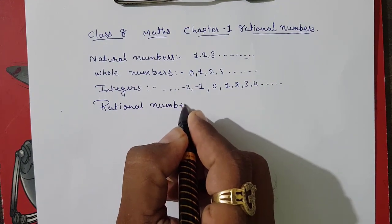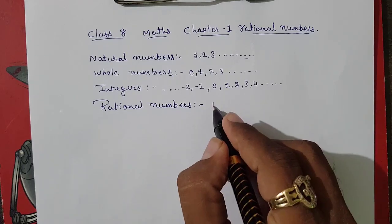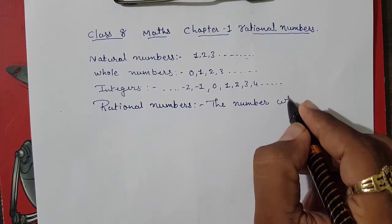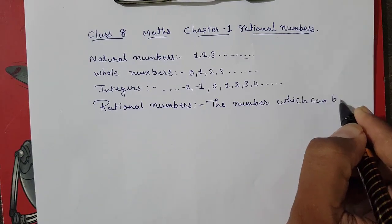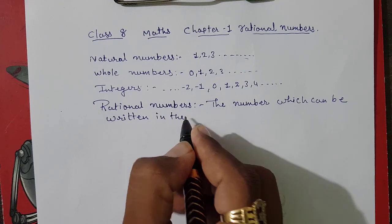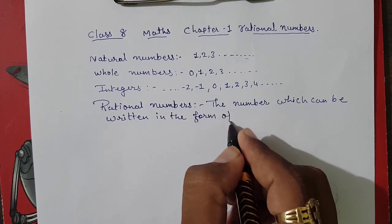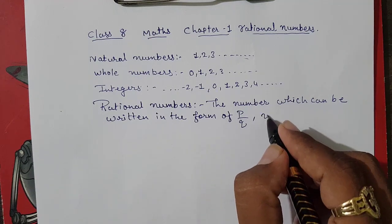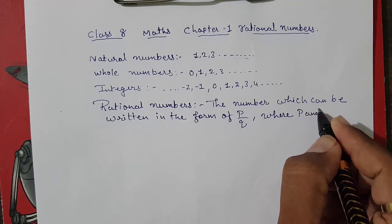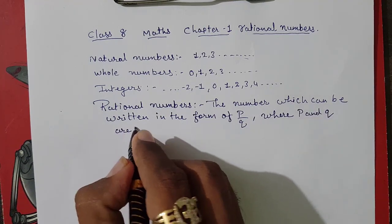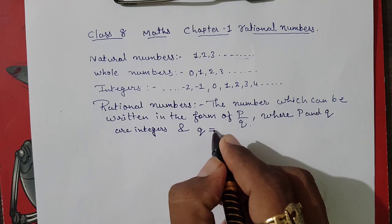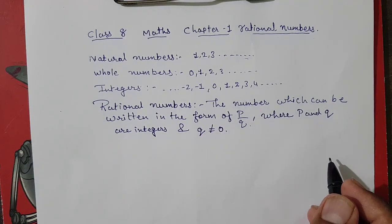Now comes rational numbers, which we are going to study in detail. What are rational numbers? The number which can be written in the form of p by q, where p and q are integers. You will understand this statement better in higher standards, but here you need to know that p and q must be integers.